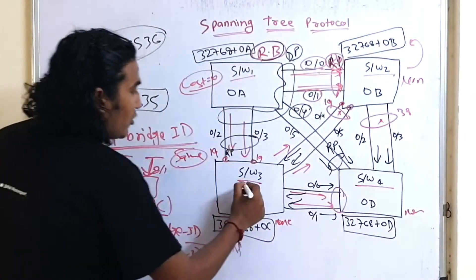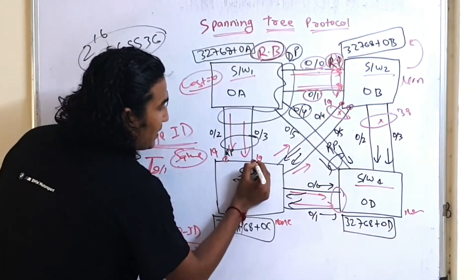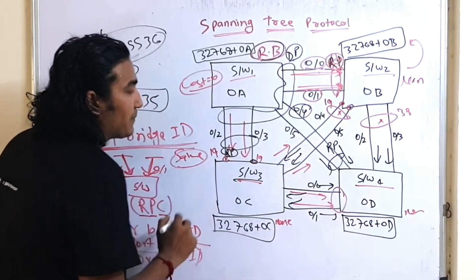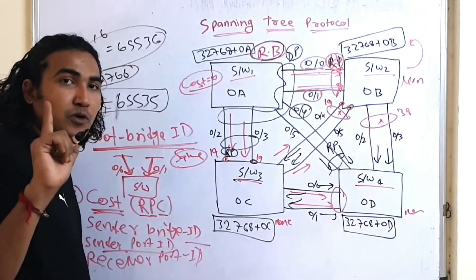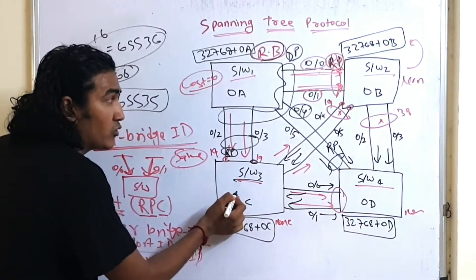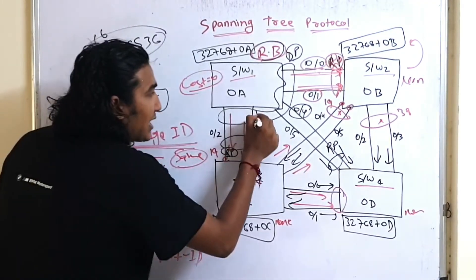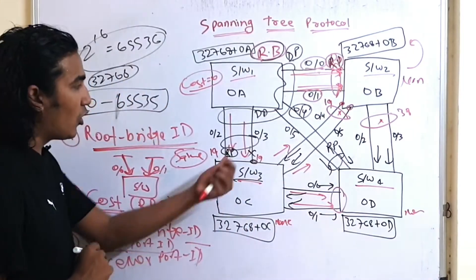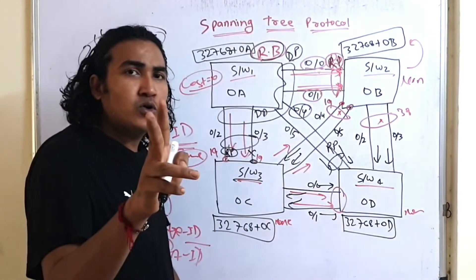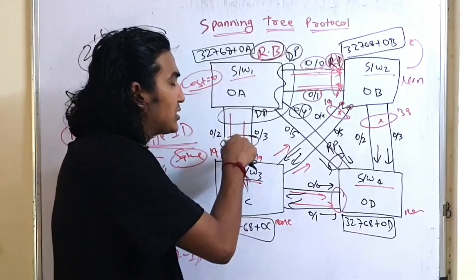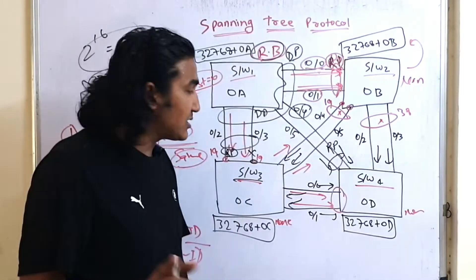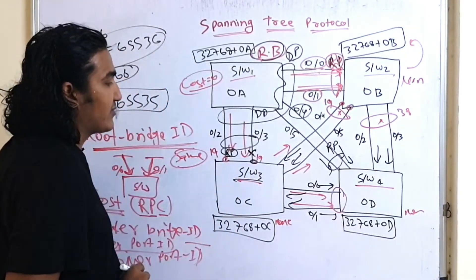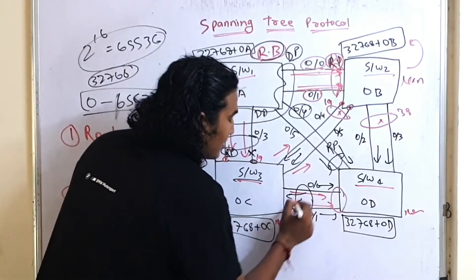On Switch 3, one port is already the RP (toward Switch 1). There can be only one RP per non-root bridge switch. Another port on Switch 3 is already a DP. Therefore, the remaining port will become alternate, because there cannot be two DPs on a single segment.